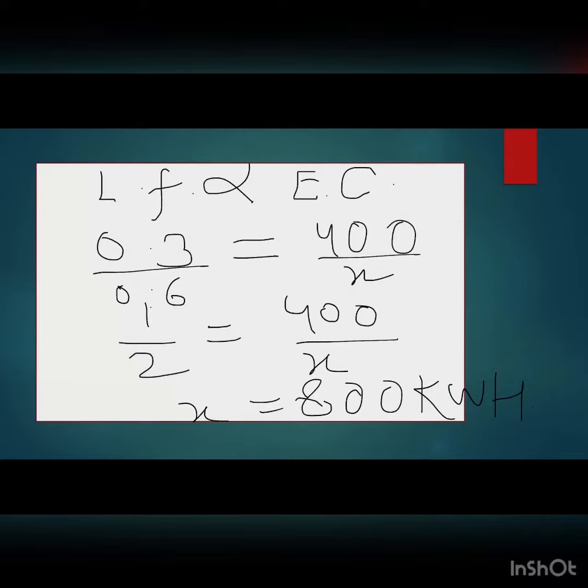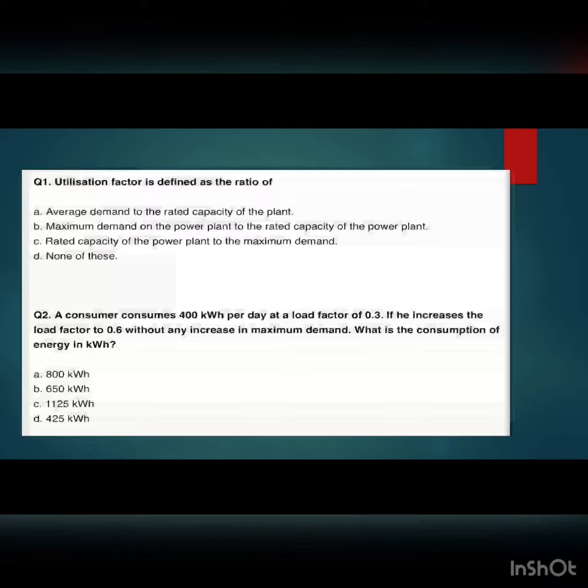Cross multiplying, we get 800 kilowatt hours. So the value we got is 800 kilowatt hours. Option A is correct.